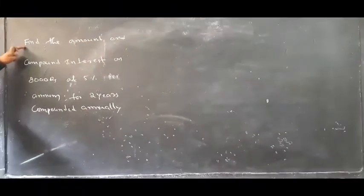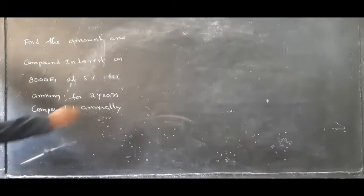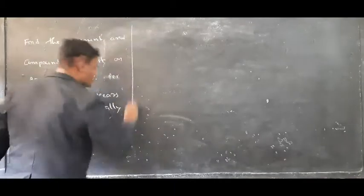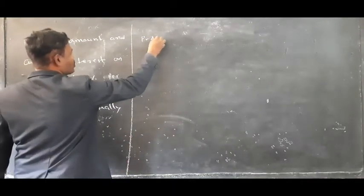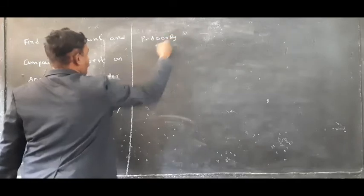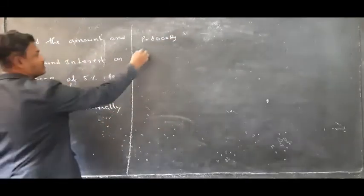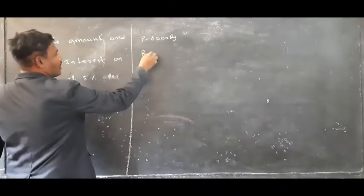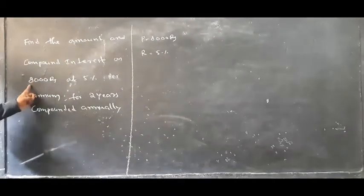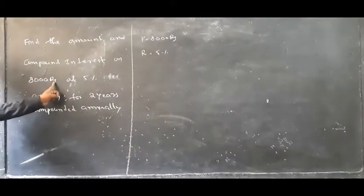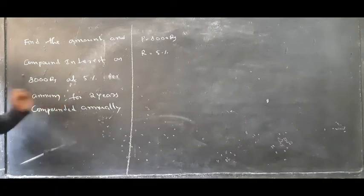Find the amount and the compound interest on Rs. 8000. Here, what is the principal amount? P is equal to Rs. 8000. And what is the rate of interest here? R is equal to 5% per annum.